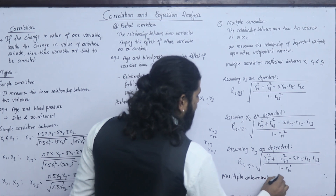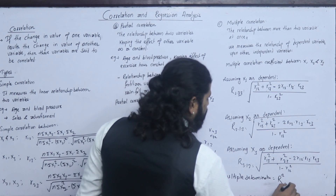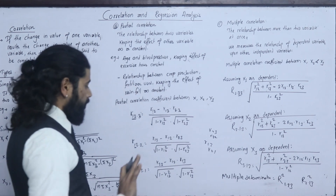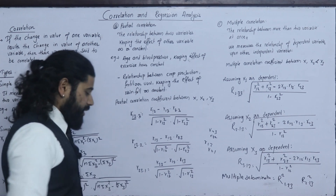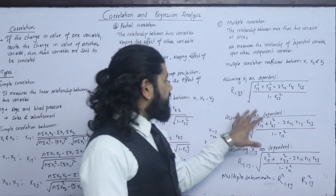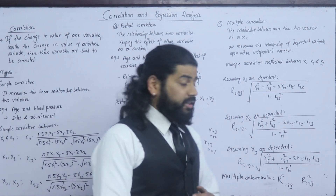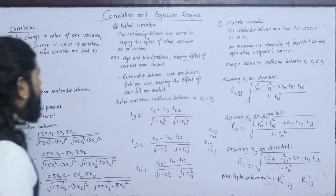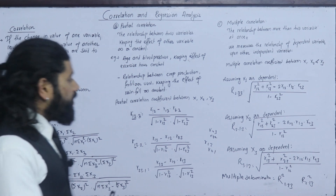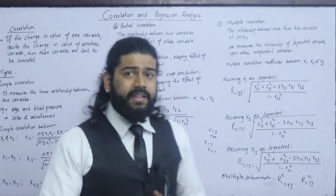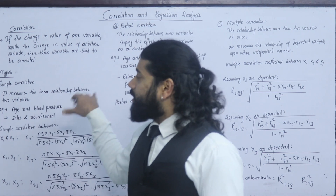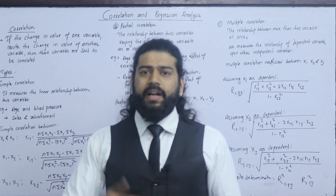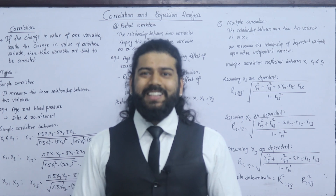I have to write the equation: R squared 1.23, R squared 2.13 — these are the partial and multiple determination coefficients. I will explain the equation and solve the problem next class. Thank you.